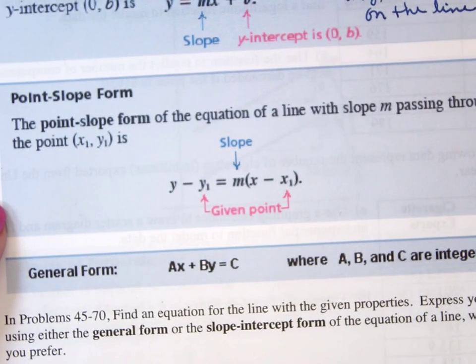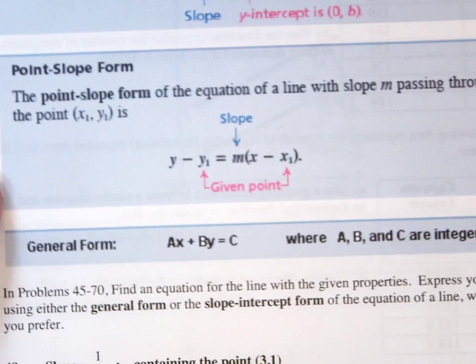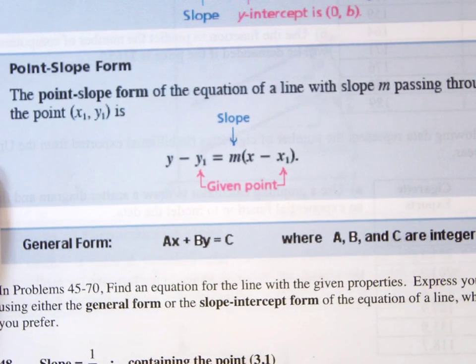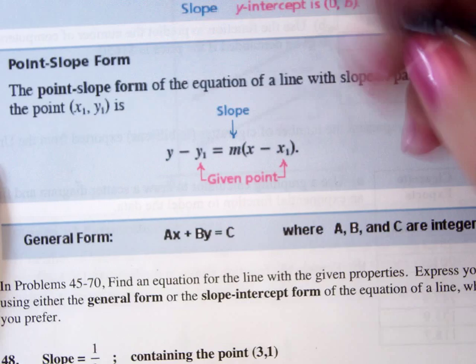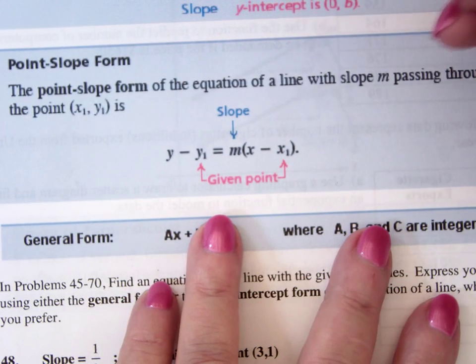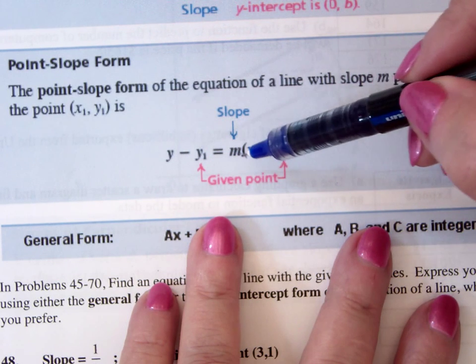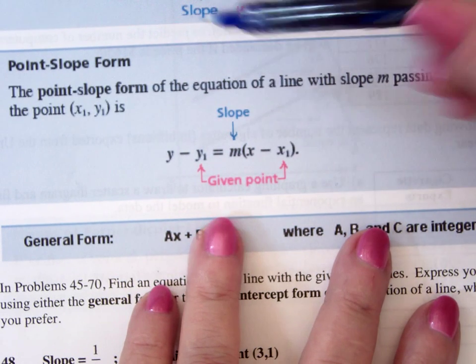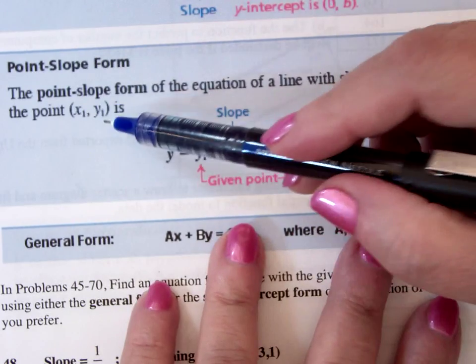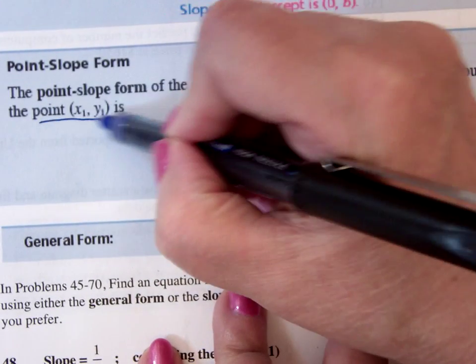The one I use most frequently, although sometimes I'll put it into slope-intercept form if I'm going to graph it, is the point-slope form of the equation. I usually use this to find, if I need to find an equation of the line, and that says y minus y1 is equal to m times x minus x1, where x1, y1, this is given.